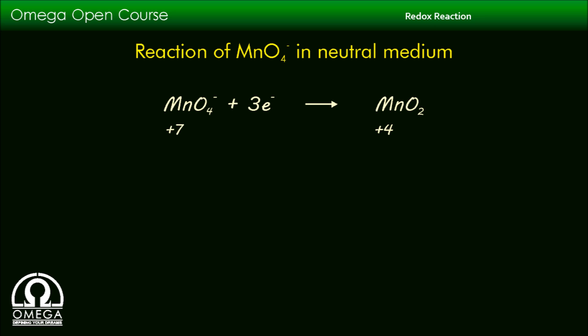The oxidation number of Mn in MnO4 minus is plus 7 and in MnO2 it is plus 4. Oxidation number is decreased by 3 and therefore 3 electrons are being absorbed in this reduction process.